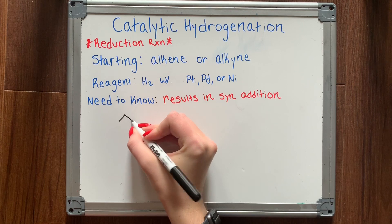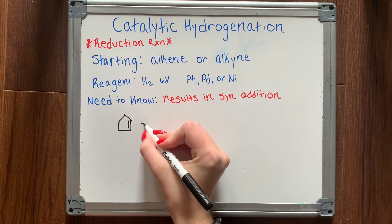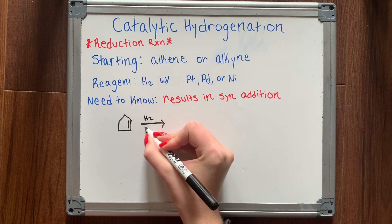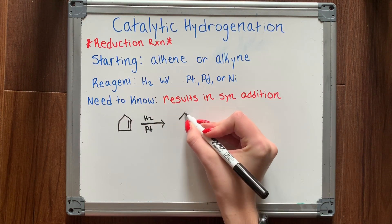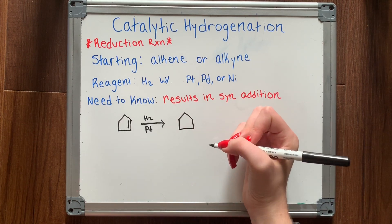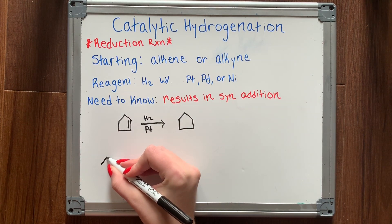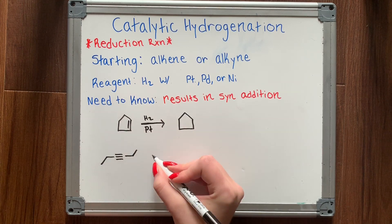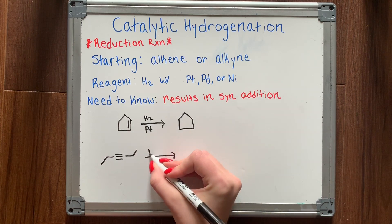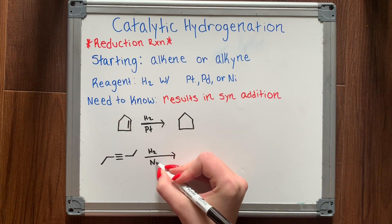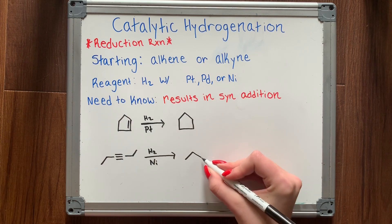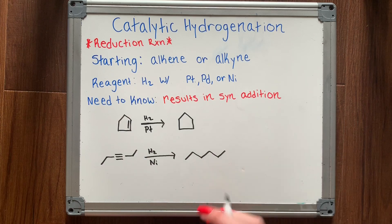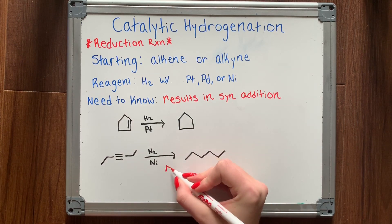First is catalytic hydrogenation. This reduction reaction works for both alkenes and alkynes — you treat the alkene or alkyne with molecular hydrogen and a catalyst. The only difference is that you technically need two equivalences of the reagent for an alkyne. Also keep in mind that if a chiral center is present, this results in syn addition, meaning both substituents would be on either a wedge or both on a dash. I have shown two examples that illustrate this reaction.